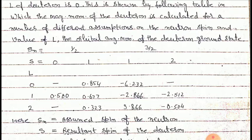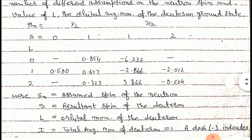Capital S means the total spin of the neutron and proton inside the deuteron — it will be either zero or one for S_n equal to half, or one or two for S_n equal to three by two. If we consider L equal to zero, we get magnetic moments of 0.854 and minus 6.232. If we consider L equal to one, we get four values of magnetic moments of the deuteron.